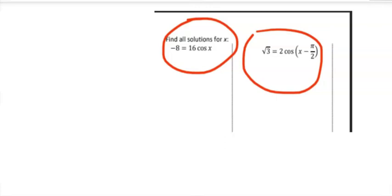Well, let's just go ahead and do these then. So negative 8 equals 16 cosine x. I'm going to get the cosine x all by itself. So first thing I'm going to do is divide both sides by 16.